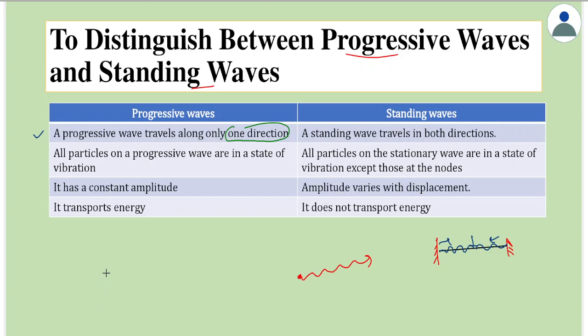Second difference is all particles on a progressive wave are in a state of vibration. So whenever a wave travels, for example, think of a single string which is attached to only one end or think of sound waves. For example, think of a person standing somewhere here and there is some disturbance or sound waves produced.